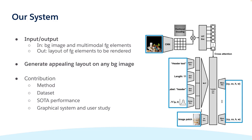We learn a generative model of conditional layout distribution that is constrained by background images and driven by the learned semantics of foreground elements. Different from previous methods, our system does not assume the type nor the appearance of the background image — plain or cluttered, artificial or natural images are all perfect canvas for graphical layout design.